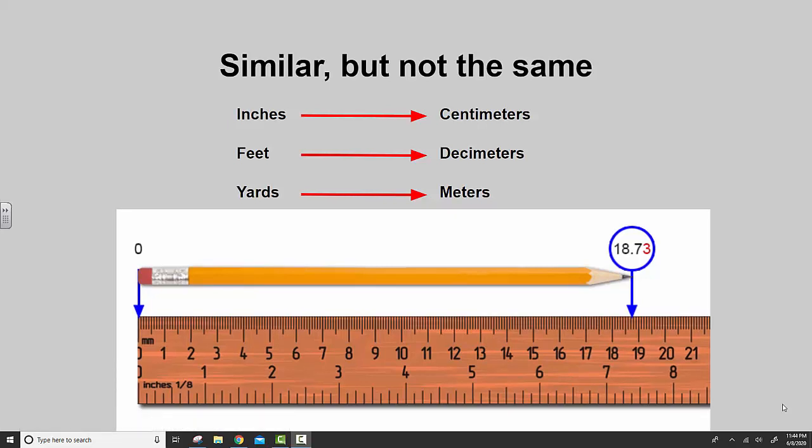So one yard, which is 36 inches, would be about 96 centimeters. But let's look at it in the reverse direction. One meter, which is 100 centimeters, is approximately 39 inches long. I know it's a little bit confusing.